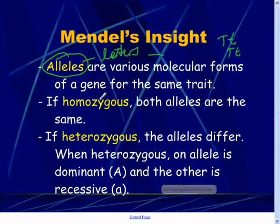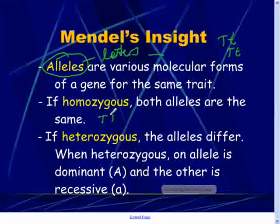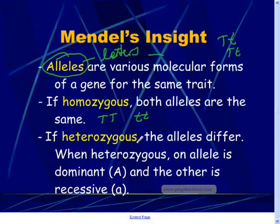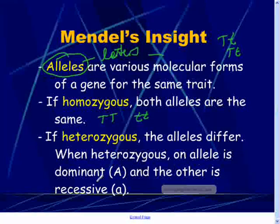If something is said to be homozygous, then both alleles are the same — for example, capital T, capital T, or lowercase t, lowercase t. The word heterozygous is when one allele is dominant, which is capital, and the other is recessive, which is lowercase.